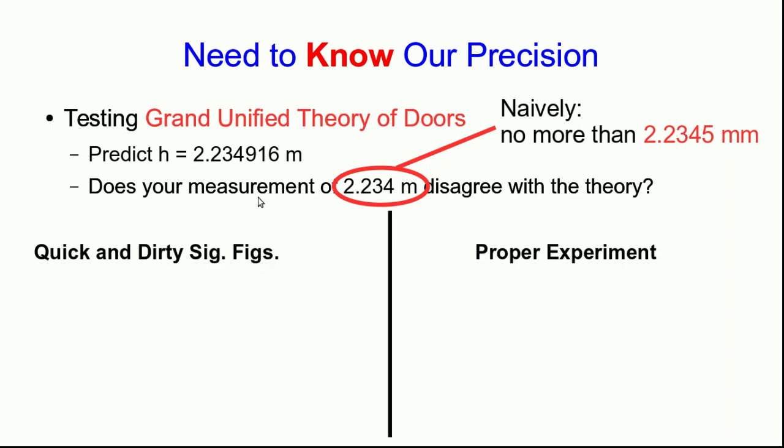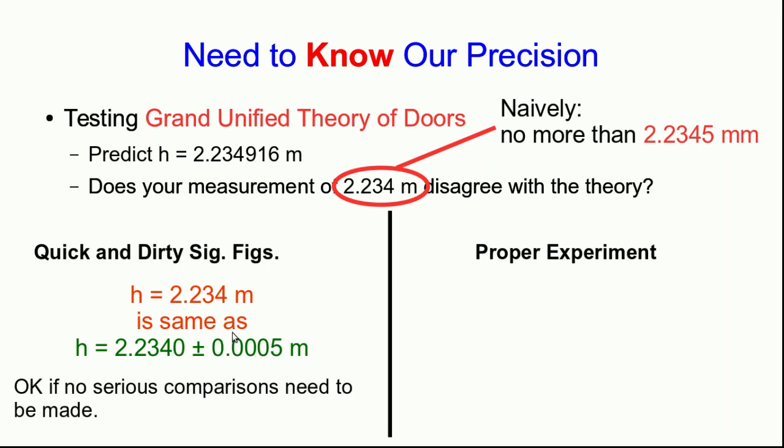But remember, we don't really know what the precision is here. We really just sort of guessed that it's half of the smallest measurement on the measuring tape. That's not really good enough. We have to know. And so what we should be doing is making multiple measurements and using the statistics of them to tell us how big the uncertainty is.